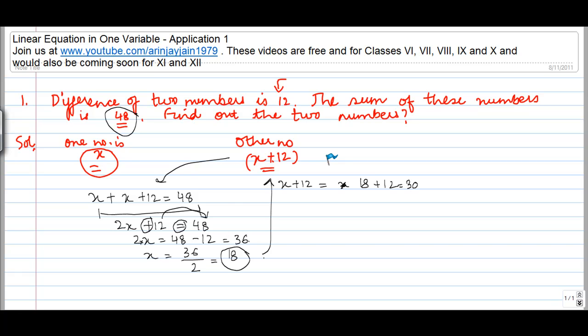So for x is equal to 18, the function resolves. So x plus 12, the other number becomes 30. And I have told that the sum of these two numbers is 48, and I know that 30 plus 18 is equal to 48. So therefore I conclude that the answers that I have received through this exercise are correct.